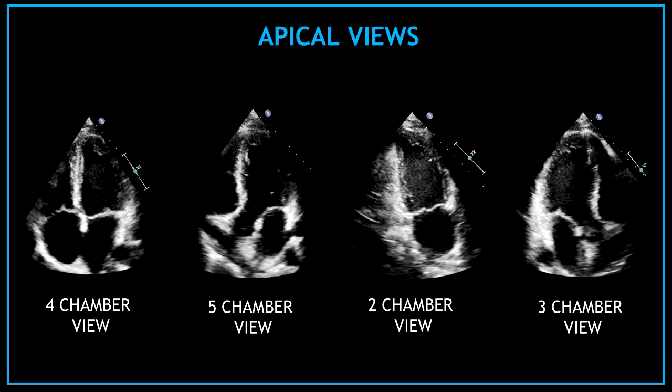This is a series of videos where I'm going to show you all the structures visualized in different views. In echocardiography there are four different types of apical views. I already made a video about the apical 4 chamber view. I'm going to leave in the comment section the link if you want to watch the 4 chamber video first.